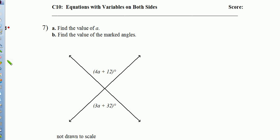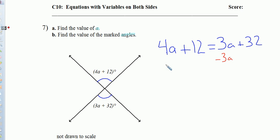Our final question on this exam, equations with variables on both sides. Concept 10 says, first find the value of a, and then find the value of the marked angles. We should recognize this as vertical angles, and we should know that vertical angles are congruent, which means they have the same measure. These two angles have the same measure, which means that 4a + 12 has to be the same as 3a + 32. If we subtract 3a from both sides, we've got variables on both sides, so let's get them all on one side. We find that a + 12 is the same as 32. Then we subtract that 12 away from both sides. That will isolate our a. a is equal to 32 minus 12, or 20.